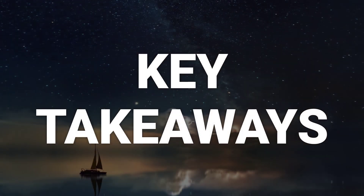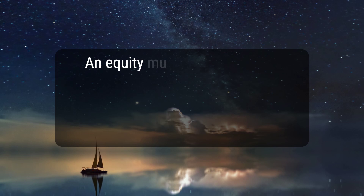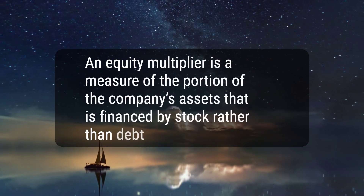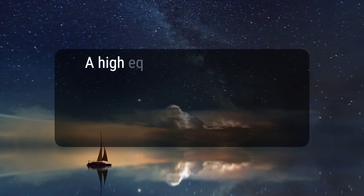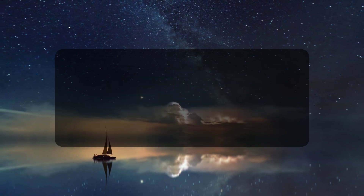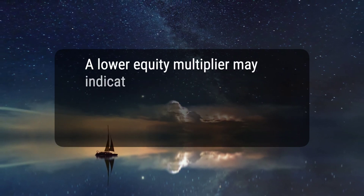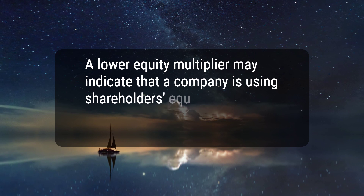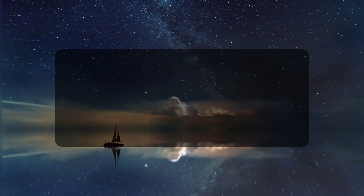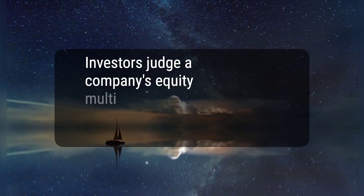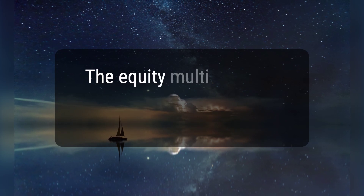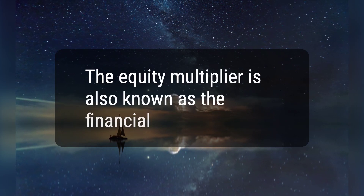Here are five key takeaways. 1. An equity multiplier is a measure of the portion of the company's assets that is financed by stock rather than debt. 2. A high equity multiplier generally means that a company has a higher level of debt. 3. A lower equity multiplier may indicate that a company is using shareholders' equity to finance its assets, or that it cannot attract lenders for a loan. 4. Investors judge a company's equity multiplier in the context of its industry and its peers. 5. The equity multiplier is also known as the financial leverage ratio.